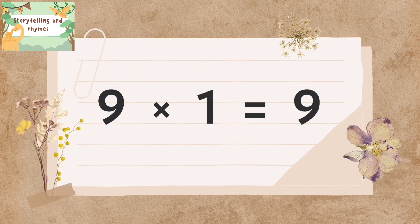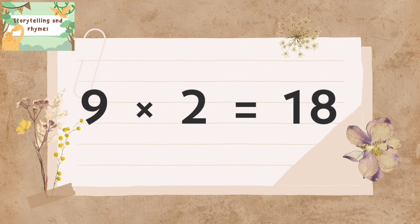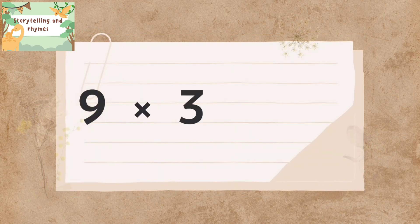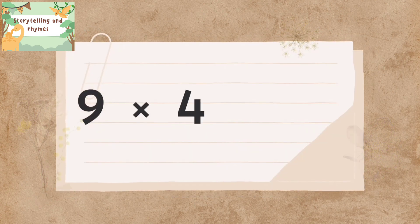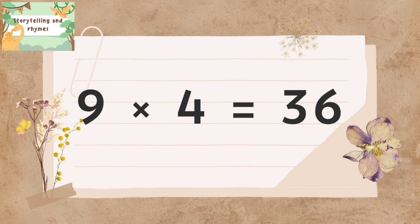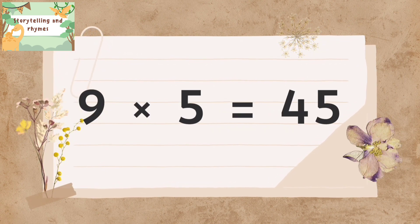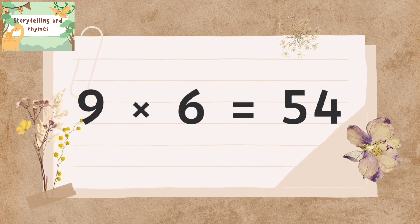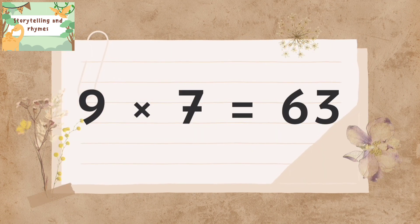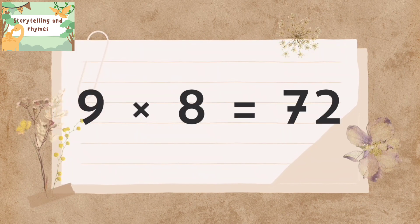Table of 9: nine ones are 9, nine twos are 18, nine threes are 27, nine fours are 36, nine fives are 45, nine sixes are 54, nine sevens are 63, nine eights are 72.